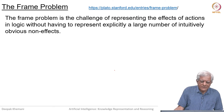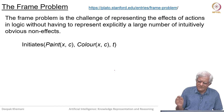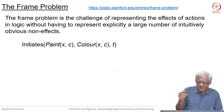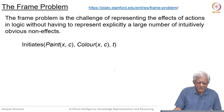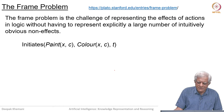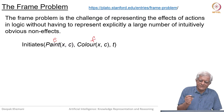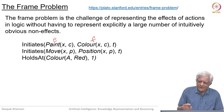The frame problem is the challenge of representing the effects of actions in logic without having to represent explicitly a large number of intuitively obvious non-effects. We do not want to make explicit statements that this is not changing, this is not changing. For example, if you paint an object x with color c, then the color of that object will become c — this is an event and this is a fluent, and 'initiates' relates the event to the fluent. If you move an object to position p, then the position of that object would become p.